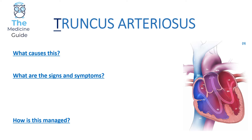Truncus Arteriosus leads to cyanotic congenital heart disease — it begins with T. It involves a common trunk between the aorta and pulmonary arteries, so both deoxygenated blood from the right side and oxygenated blood from the left side enter both vessels. This creates mixed blood — oxygenated red and deoxygenated blue — producing essentially purple blood traveling through the body.